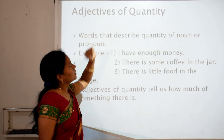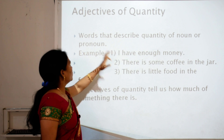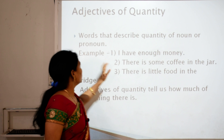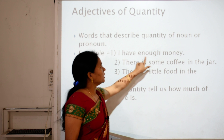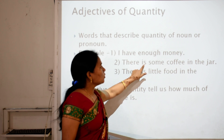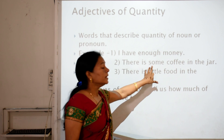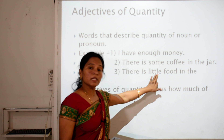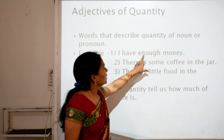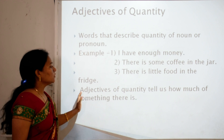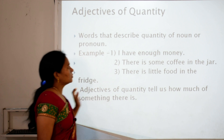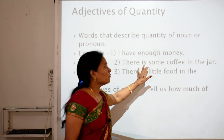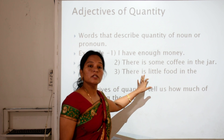Next, adjectives of quantity — words that describe the quantity or amount of a noun or pronoun. For example, 'I have enough money' — 'enough' describes the quantity of money. 'There is some coffee in the jar' — 'some' describes the quantity of coffee. 'There is little food in the fridge' — 'little' describes the quantity of food. So enough, some, and little are adjectives of quantity. They answer the question 'how much?' — how much money? Enough. How much coffee? Some. How much food? Little.